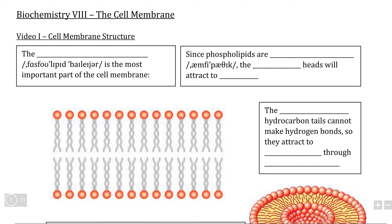Now that you've been introduced to all four families of biological molecules, it's time to look at how they all come together to produce the cell membrane. The first, most common, and most important part of the cell membrane are phospholipids, which we were introduced to in the lipid section. They are the most important because of the way they naturally form this double-layered structure called a phospholipid bilayer, which composes the overwhelming majority of the structure of the cell membrane.